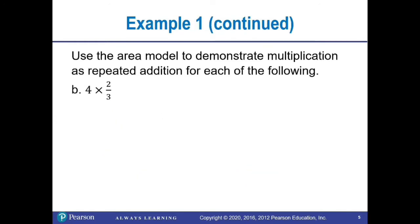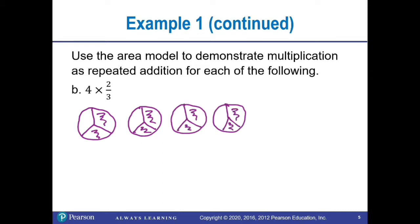In part B, we have four times two-thirds. I'll draw a circle and shade two-thirds of it, and repeat this four times. So I have two-thirds plus two-thirds plus two-thirds plus two-thirds. The denominators are the same, so I add the numerators. Two plus two plus two plus two is eight, and the denominator is three, so I have eight-thirds. I can also count the shaded parts: one, two; three, four; five, six; seven, eight. The circles are divided into thirds, so we have eight-thirds.